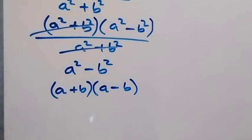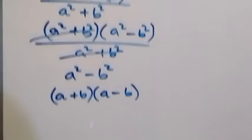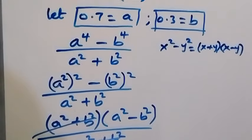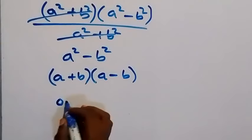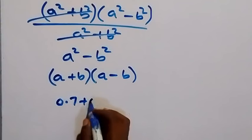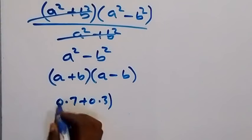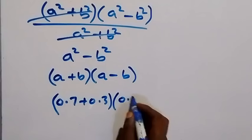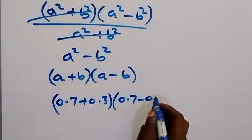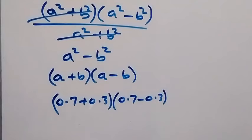Then we can now bring the value of a and b. We represented a as 0.7 and b as 0.3. So when we bring it down here, we now have 0.7 plus 0.3, then close bracket, also open bracket, 0.7 minus 0.3, close bracket.